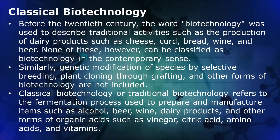Classical Biotechnology: Before the 20th century, the word biotechnology was used to describe traditional activities such as the production of dairy products such as cheese, curd, bread, wine, and beer. None of these, however, can be classified as biotechnology in the contemporary sense. Similarly, genetic modification of species by selective breeding and plant cloning through grafting are not included. Classical biotechnology refers to the fermentation process used to prepare items such as alcohol, beer, wine, dairy products, and other organic acids such as vinegar, citric acid, amino acids, and vitamins.